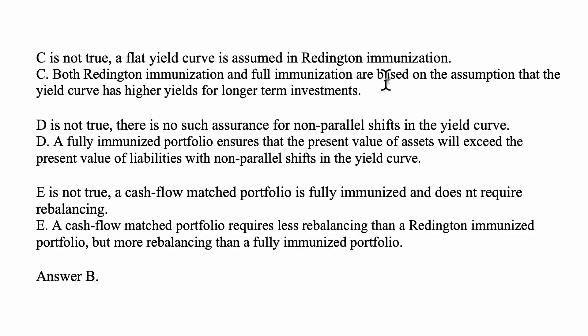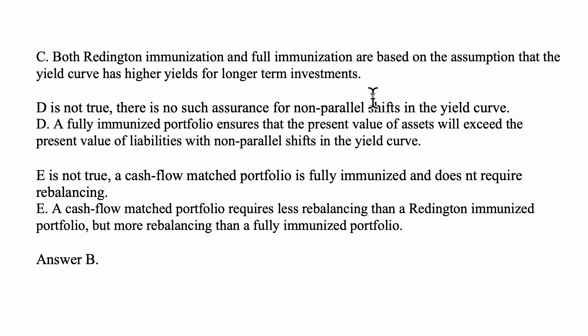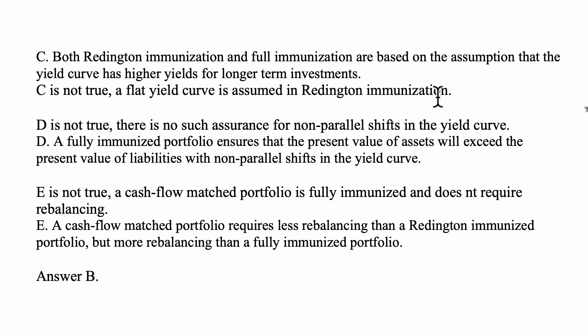Statement C says that both Redington immunization and full immunization are based on the assumption that the yield curve has higher yields for longer-term investments. C is not true — a flat yield curve is assumed in Redington immunization.